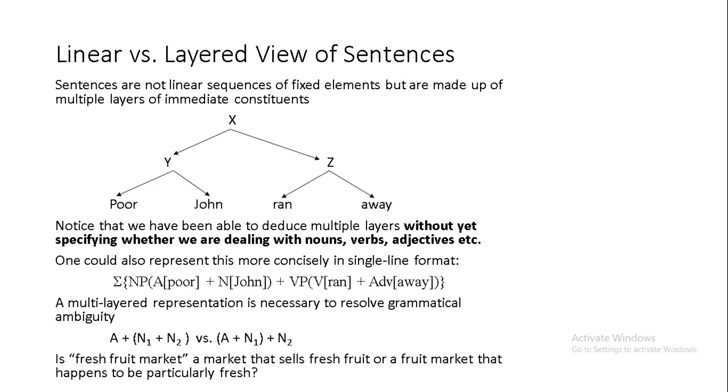It is useful to at least consider such approaches, especially when one realizes that real sentences are not simply linear sequences of fixed elements but are always made up of multiple layers of immediate constituents. The classic tree diagram for example reveals at least three layers even for an extraordinarily simple example. The extremely simple sentence poor John ran away is one which we have an intuitive sense should be broken up into two different halves. Even if we don't yet have a name for each of these, we have a sense that poor John the subject of the sentence and ran away the action which that subject is doing should be thought of as two different parts of the sentence and we could simply assign Y and Z as generic or working titles for these intermediate structures and X for a working title for the still deeper structure which dominates the entire sentence.